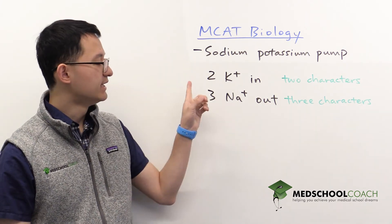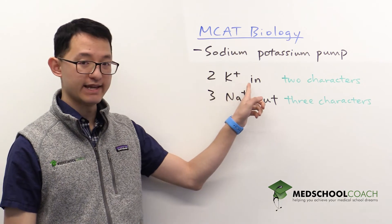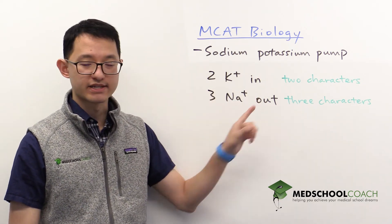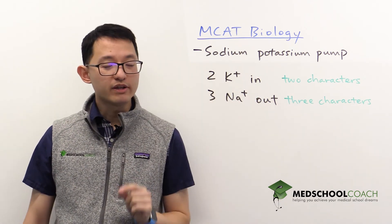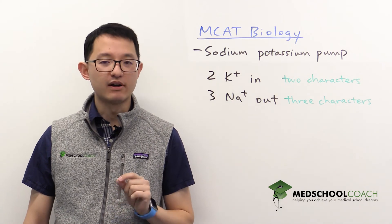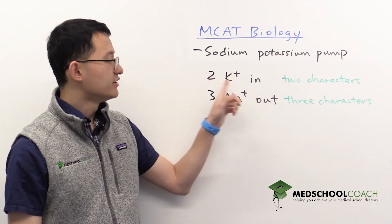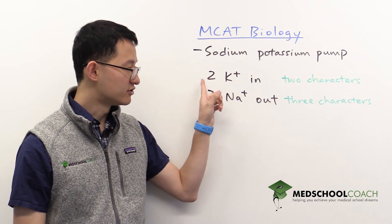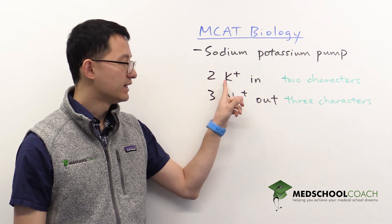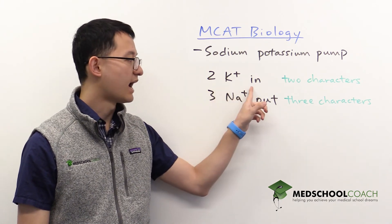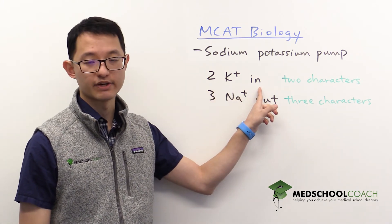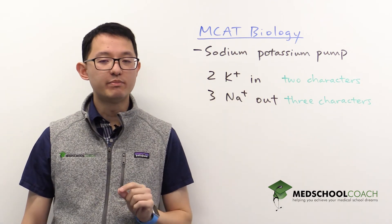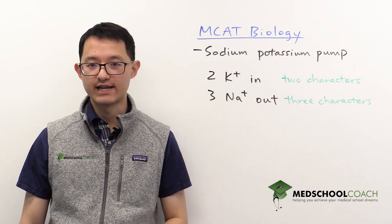You can see here it's two potassium cations into the cell and three sodium cations out of the cell. What you want to focus on is the number of characters. Two characters — K+ has two characters, and IN has two characters. So you can remember that two potassium cations go into the cell.